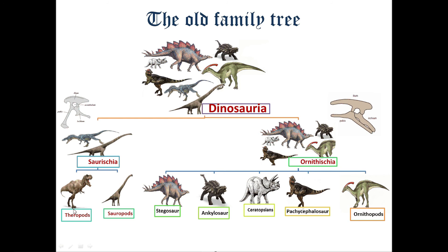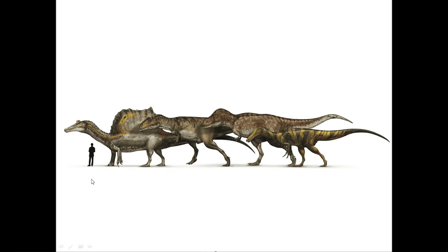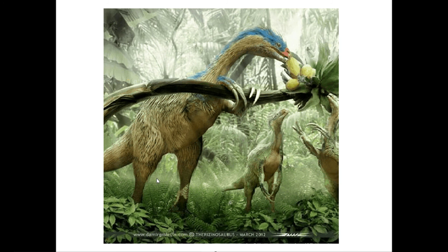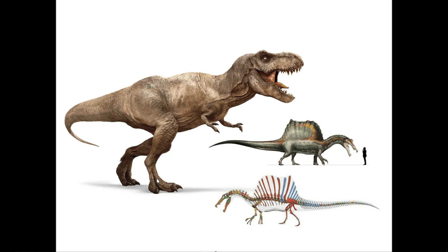Then come theropods. Theropod dinosaurs include Tyrannosaurus rex, Spinosaurus, raptors, and many others. Even all birds are actually theropods. Most of them were carnivores while a few were herbivores or omnivores. Many of them were bipeds, like Tyrannosaurus rex, and all birds are also bipeds walking on their hind legs. But a few were facultative quadrupeds — primarily adapted for bipedalism but able to walk on four legs, like Spinosaurus.